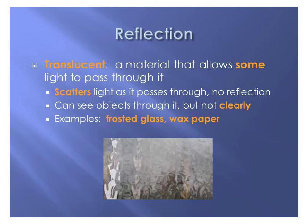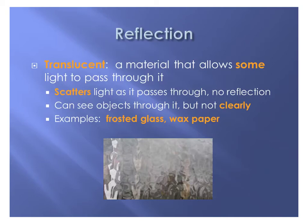There is a middle ground between opaque and transparent called translucent. This is the type of material that lets some light pass through it, but as it goes through, the light gets scattered in different directions. You can see some objects through it, but it's not very clear. An example is the frosted glass window in my classroom, or the frosted glass in certain showers for privacy. Wax paper used in baking is also translucent — you can make out shapes on the other side, but it's not see-through.